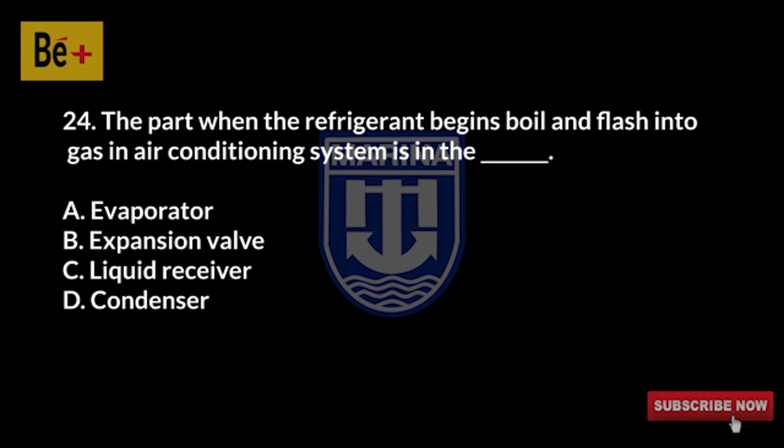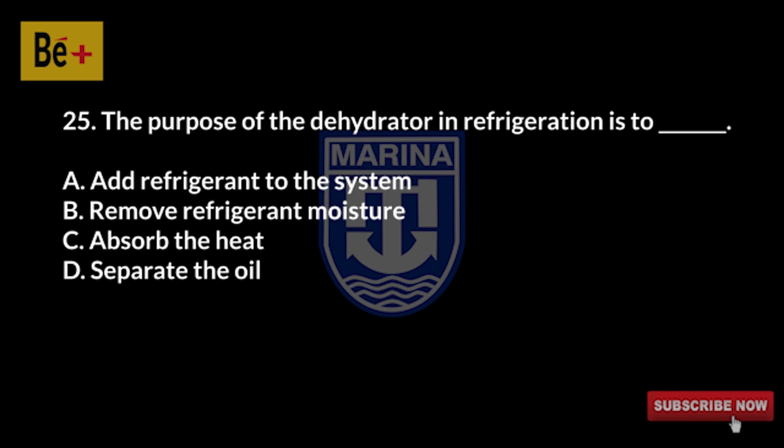The part where the refrigerant begins to boil and flash into gas in an air conditioning system is the: A) evaporator, B) expansion valve, C) liquid receiver, D) condenser. The answer is A, evaporator. The purpose of the dehydrator in refrigeration is to: A) add refrigerant to the system, B) remove refrigerant moisture, C) absorb the heat, D) separate the oil. The answer is B, remove refrigerant moisture.